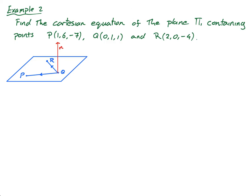Okay, now, first, what I actually need to do is find Q, P, and Q, R. So let's do that first, Q, P, Q, P equals P minus Q, which is 1, 6, minus 7, minus Q, which is 0, 1, 1, this minus this is 1, this minus this is 5, this minus this is negative 8.